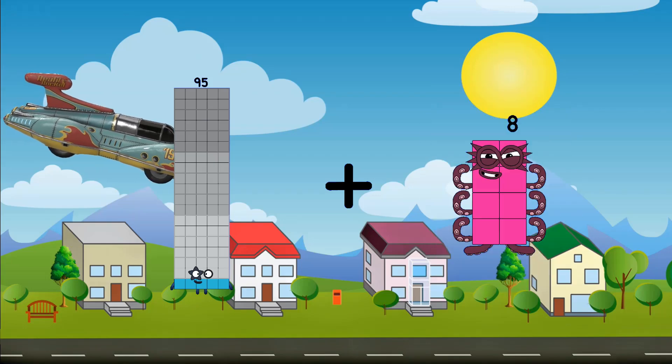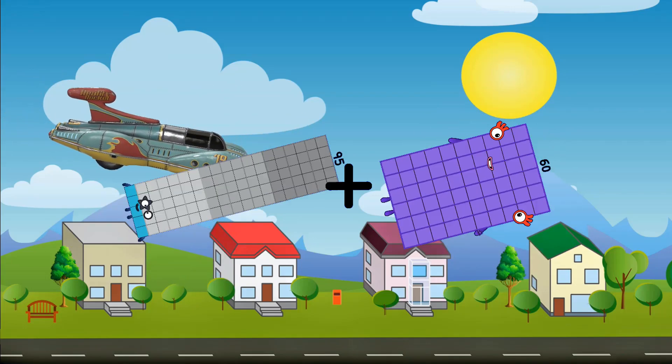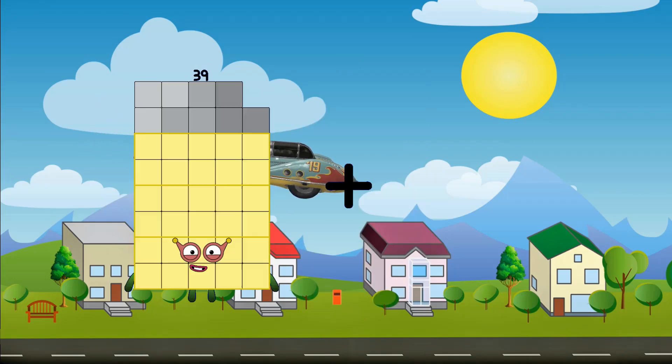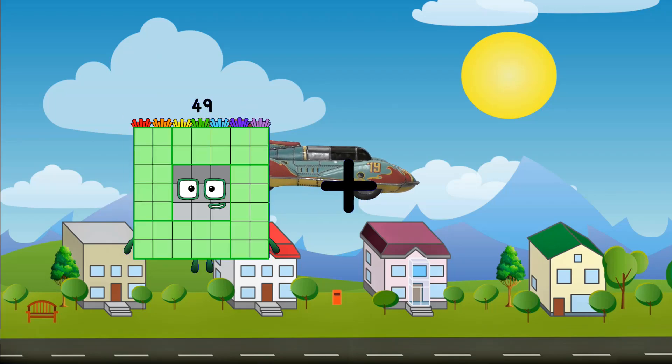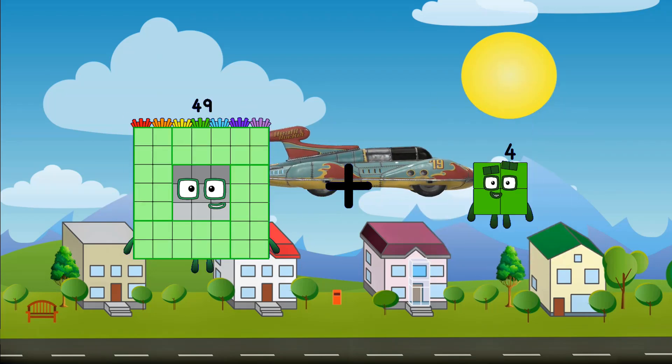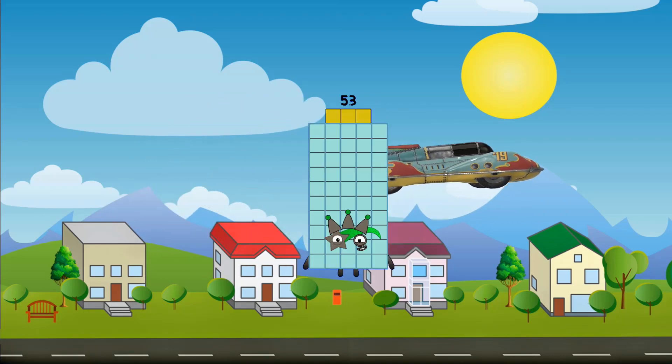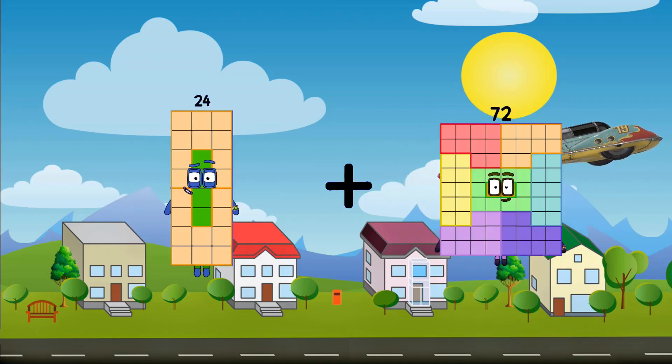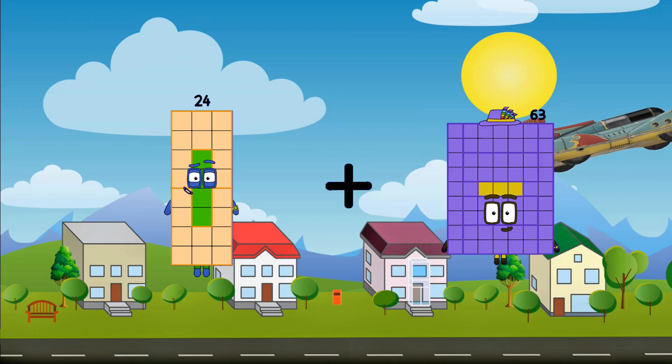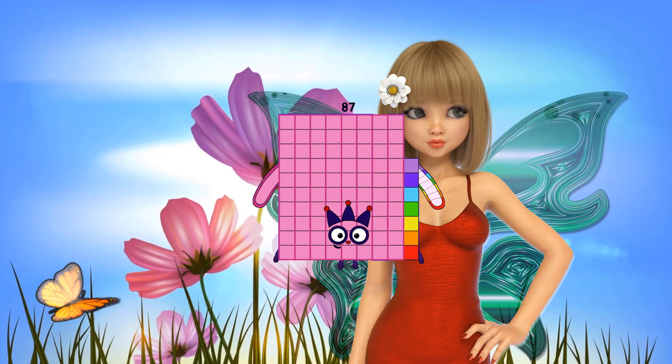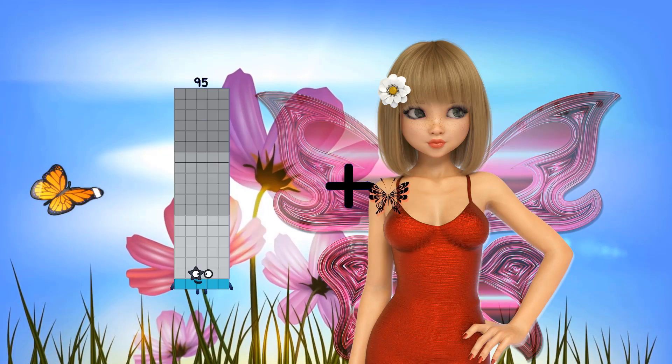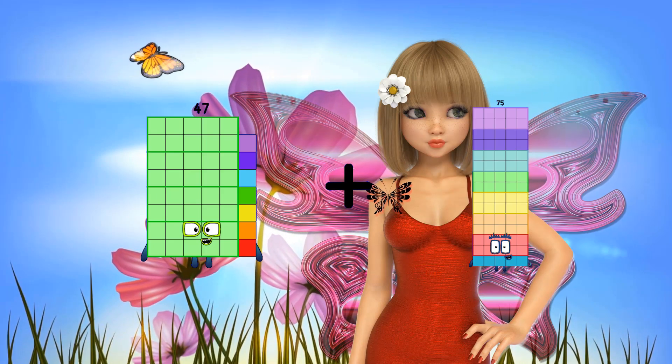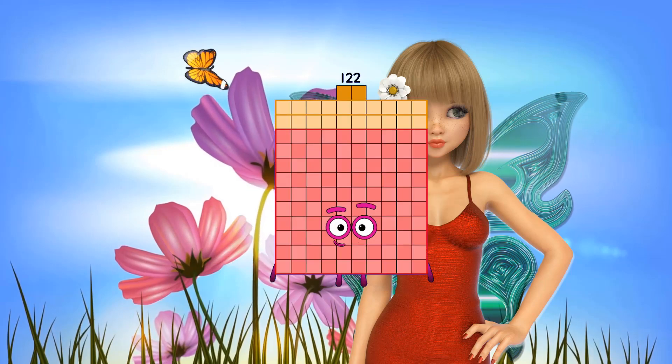Ninety-five plus sixty equals one hundred fifty-five. Forty-nine plus four equals fifty-three. Twenty-four plus sixty-three equals eighty-seven. Forty-seven plus seventy-five equals one hundred twenty-two.